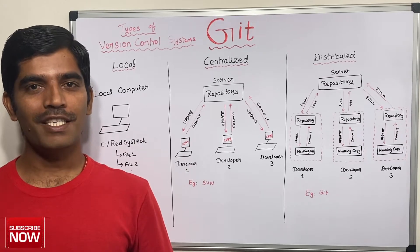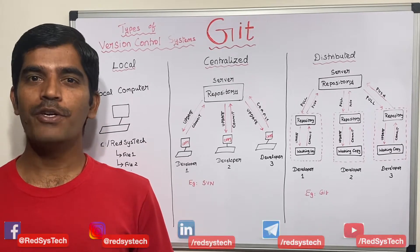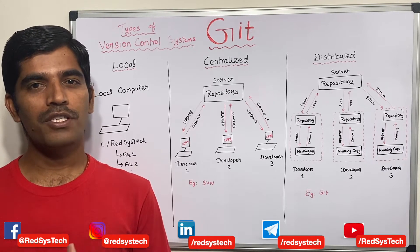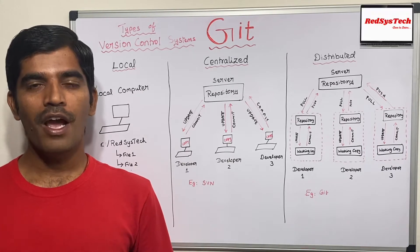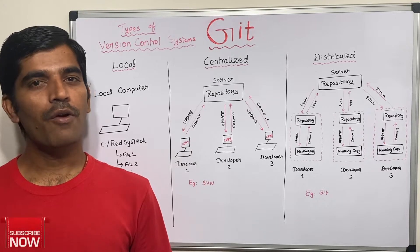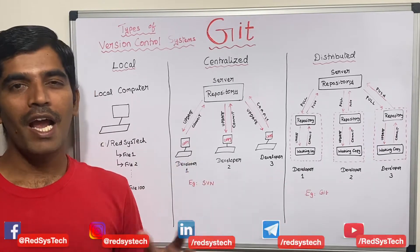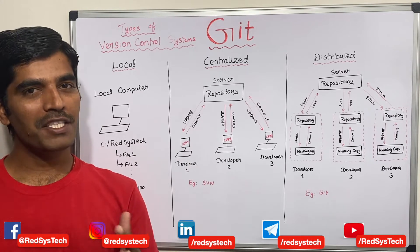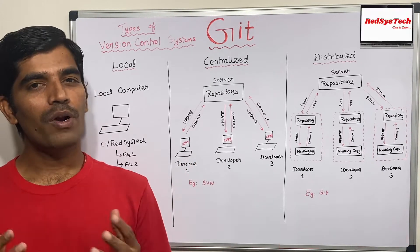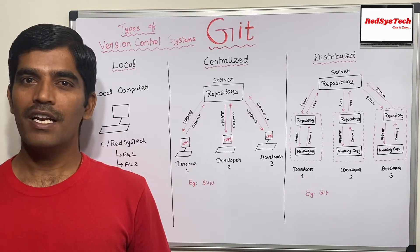Hello everyone, welcome to Registech. I'm Karthik Kundaswami. In this video, we are going to learn about the different types of version control systems and we are going to see in and out of each of these — local, centralized, and distributed — how each actually works, typical examples, drawbacks, and advantages. Let's get started.